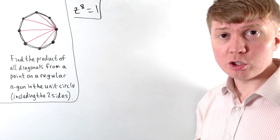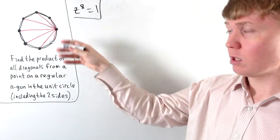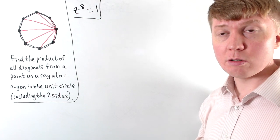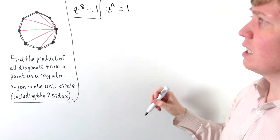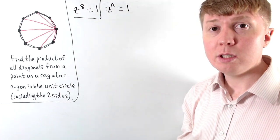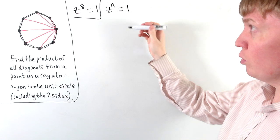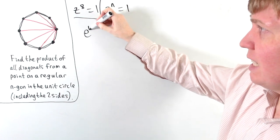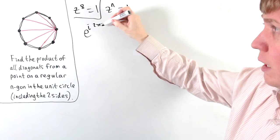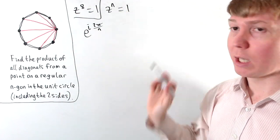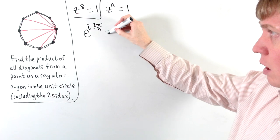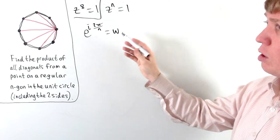And if we want to do this more generally, let's say we've got n sides on our polygon, we can do this using our nth roots of unity. So our solutions to the equation z to the n equals 1. So now if we take our first non-trivial root of this equation, we would have e to the i times 2π divided by n, so that when we raise this to the power of n, we get back to 1. And let's call this omega. So this is our first non-trivial root.